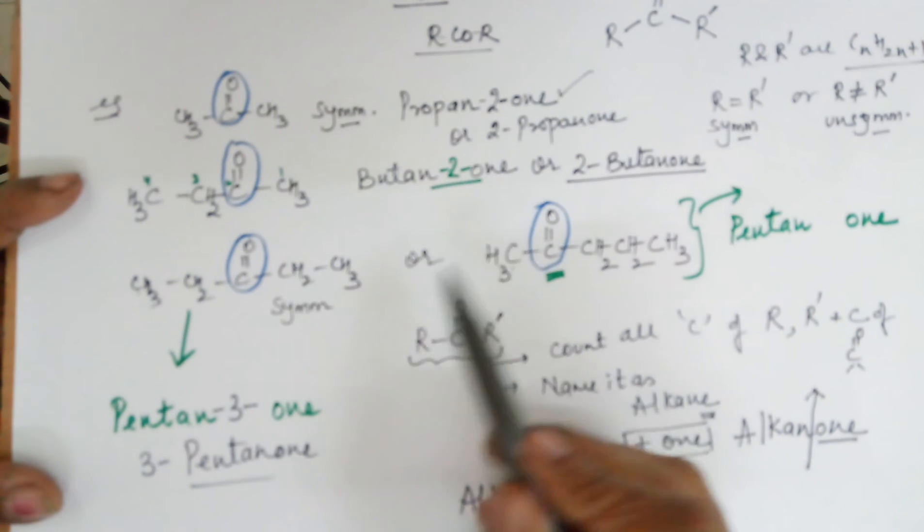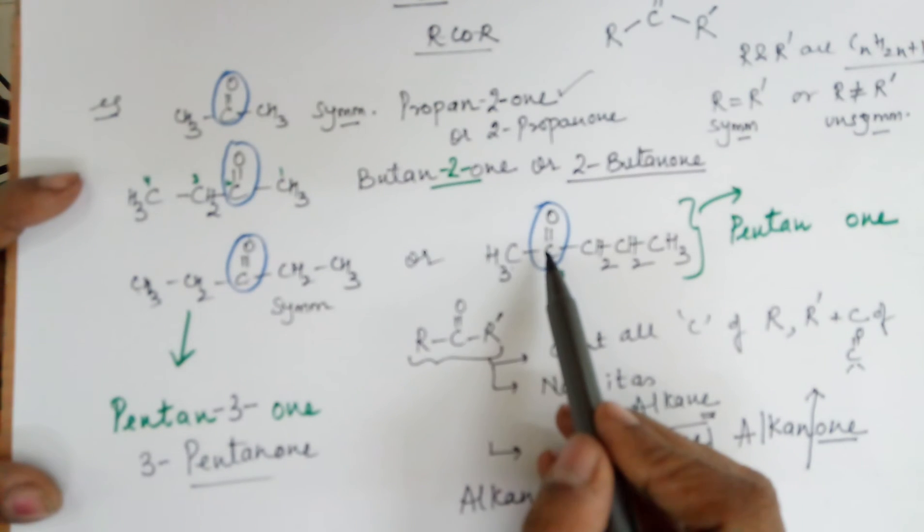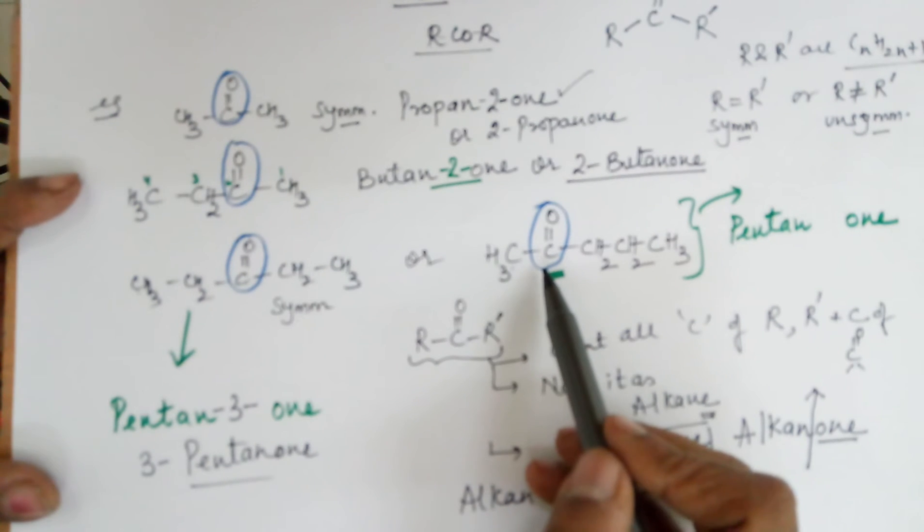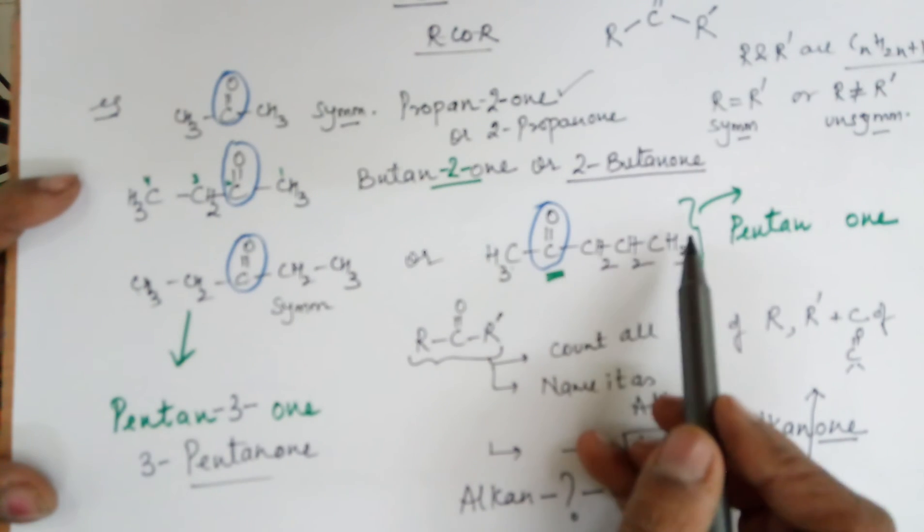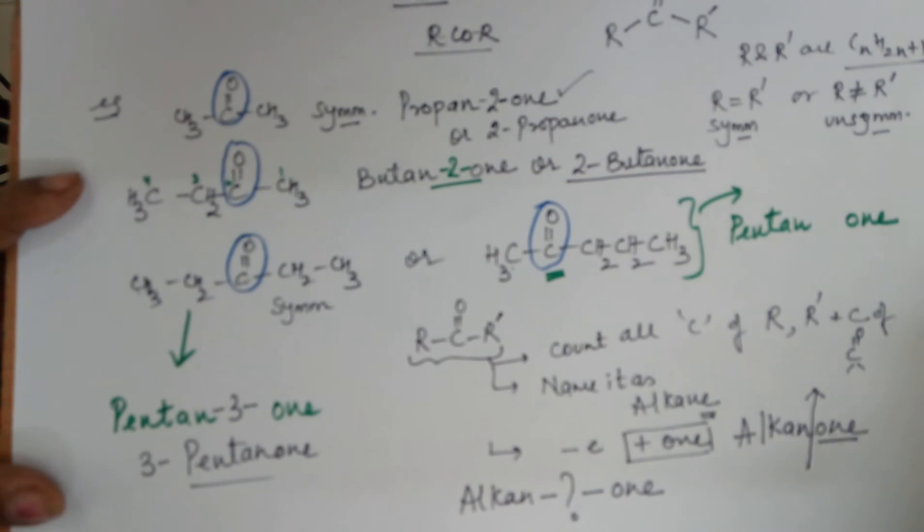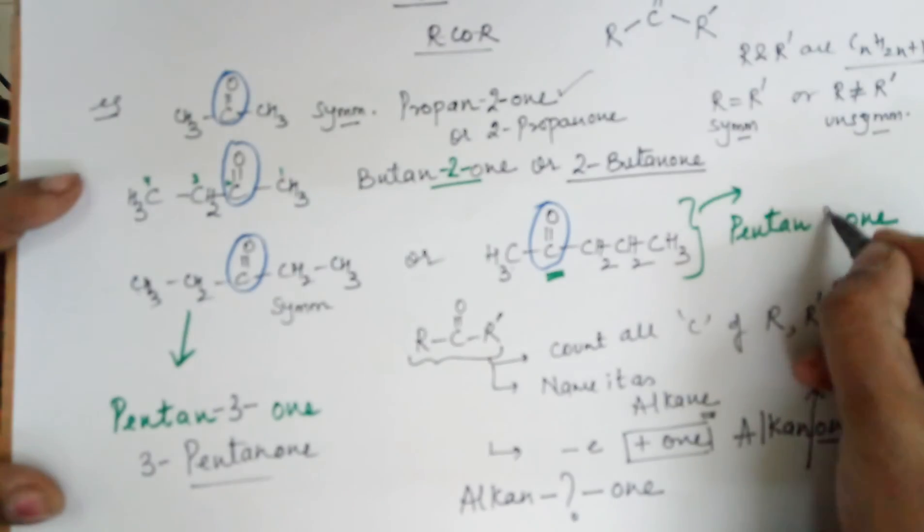So the numbering has to be from the left so that your ketone gets a lower number. So the value is 1, 2, 3, 4 and 5. Pentane. And your ketone is at what position? 2. So the name should be pentane-2-one.